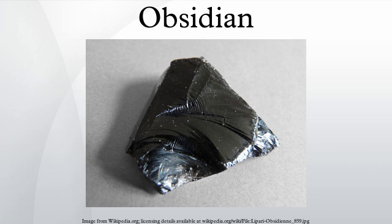Occurrence: Obsidian can be found in locations which have experienced rhyolitic eruptions. It can be found in Argentina, Armenia, Azerbaijan, Canada, Chile, Georgia, Greece, El Salvador, Guatemala, Iceland, Italy, Japan, Kenya, Mexico, New Zealand, Peru, Scotland, Turkey, and the United States.